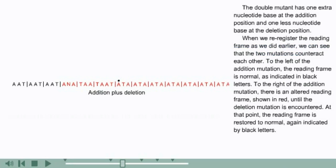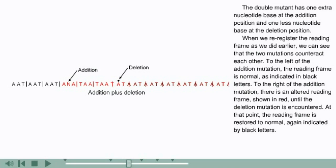When we re-register the reading frame, we can see that the two mutations counteract each other. To the left of the addition mutation, the reading frame is normal, as indicated in black letters. To the right of the addition mutation, there is an altered reading frame, shown in red, until the deletion mutation is encountered. At that point, the reading frame is restored to normal, again indicated by black letters.